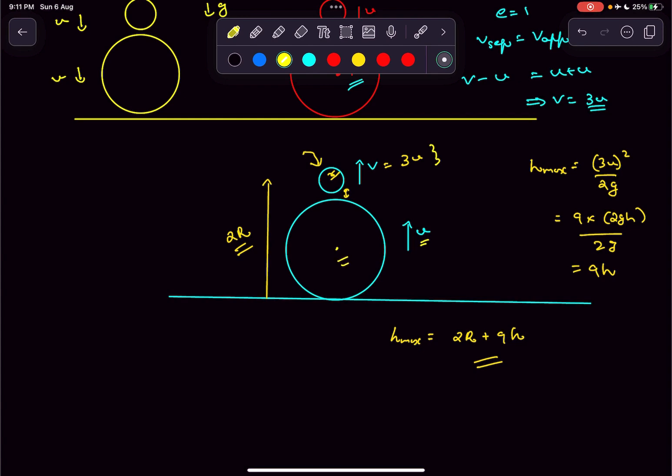The velocity of this small ball becomes 3 times. The thing is the loss in kinetic energy of this big ball is actually equal to the gain in kinetic energy of the small ball.